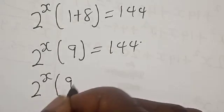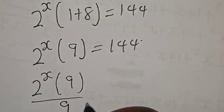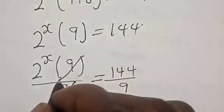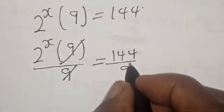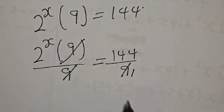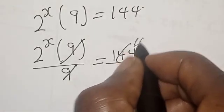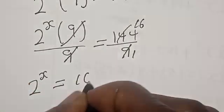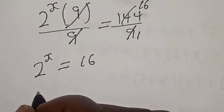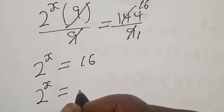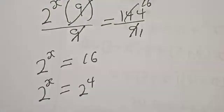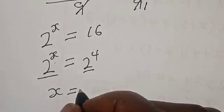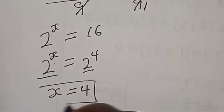Let's divide both sides by 9: 2 raised to power s into 9 divided by 9 equals 144 divided by 9. The 9s cancel, giving 16. Now we have 2 raised to power s is equal to 16, which is 2 raised to power 4. They have the same base, therefore s is equal to 4. That is our final answer.